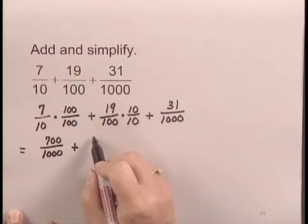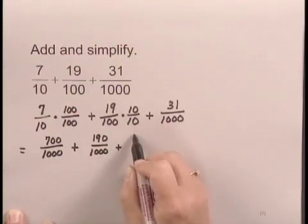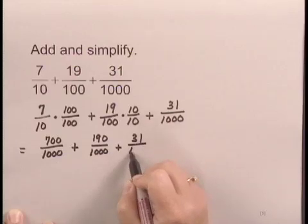Plus 190 over 1,000, plus 31 over 1,000.